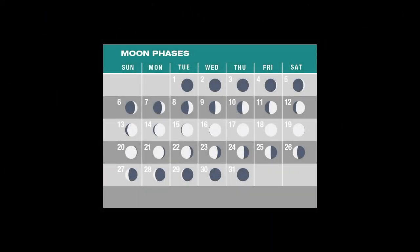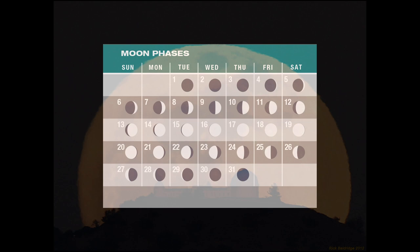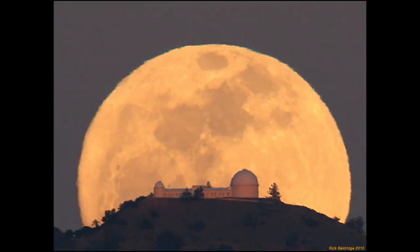One thing that won't make your head hurt this month is keeping track of the Moon's phases. During March, the lunar phase and the calendar are pretty much in sync. New Moon comes on March 2nd, followed by first quarter on the 10th and full Moon on the 18th. We round out the month with last quarter on March 25th. According to Native American lore, this month's full Moon is known as the Full Worm Moon, referring to earthworm casts left on softening ground. Other names include the Full Crow Moon, Full Crust Moon, or Full Sap Moon.